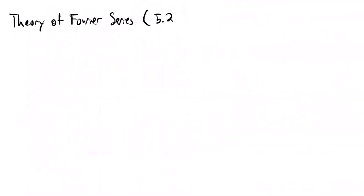At this point in the book we're around section 5.2, though I'll present things a little differently from the book, which I think assumes more background than we should assume for this class. The first thing we're going to do is introduce some terminology associated with functions that shows up a lot in the context of Fourier series. For some of you this may be review, especially if you've worked with complex numbers before.